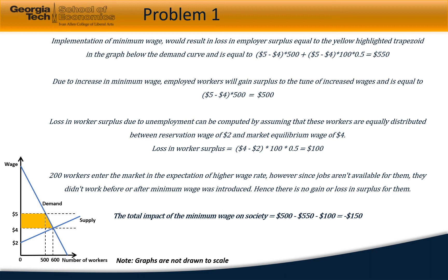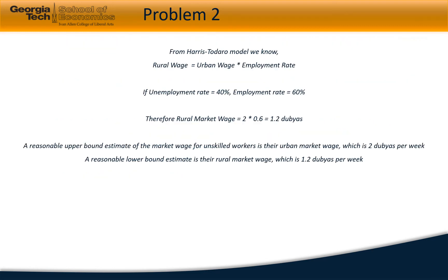Due to increases in the wage, the workers that remain employed will gain a surplus of 500 dollars. The unemployed workers would lose surplus equal to 100 dollars, based on the assumption that they are equally distributed between the two dollar reservation wage and four dollar equilibrium wage. The 200 newly entered workers did not gain or lose any surplus, so the total surplus change is negative 150 dollars.